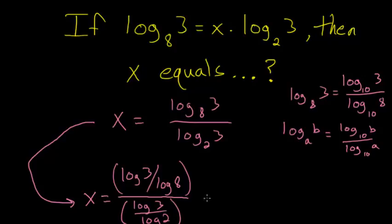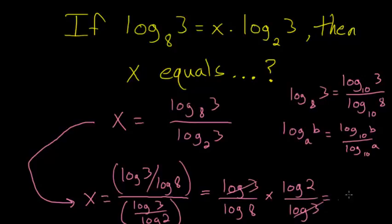You can even simplify this, since dividing by a fraction is the same thing as multiplying by that fraction's reciprocal. We could rewrite this as log 3 divided by log 8 times log 2, since we're flipping this bottom fraction, divided by log 3. Now these would cancel out, so that we're left with log 2 divided by log 8.